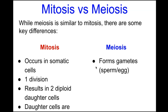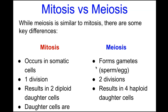In meiosis, we form gametes — that's why meiosis is also called gametogenesis. In males this is spermatogenesis; in females it's oogenesis. The formation of gametes occurs in the gonads — testes or ovaries. Meiosis undergoes two divisions — meiosis I and meiosis II — and by the end we have four haploid daughter cells that are genetically unique from one another.